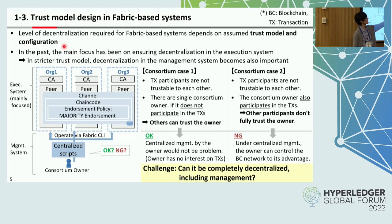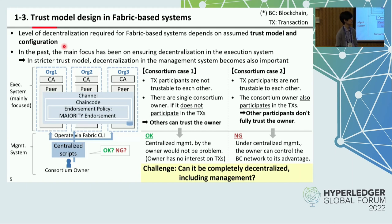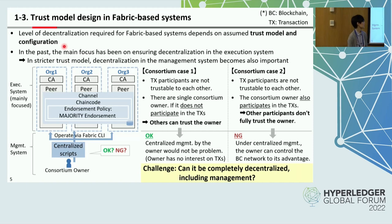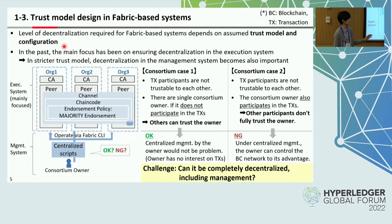In the second case on the other hand, the consortium owner also participates in the transactions. In this case, other participants don't fully trust the owner. For management, if centralized management by the owner is executed, the owner can control the blockchain network to its advantage. So such centralized management would not be acceptable. In a stricter trust model, one of the challenges is: can it be completely decentralized including management?